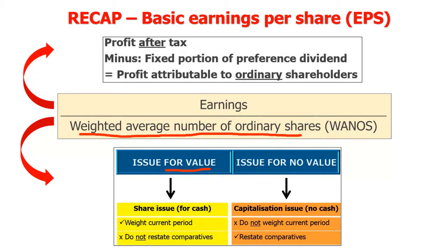With regard to issues for no value, that is where specific shares are given away for free. In our course this year we're only going to be covering capitalization issues — not share splits or share consolidations. With capitalization issues, shareholders are given a bonus share. If you're holding 10 shares, we give you an additional one. With capitalization issues, we don't do any weighting in the current year; instead we restate the prior year. That is the opposite of a for-value issue, where we weight it in the current year and don't restate any prior years.